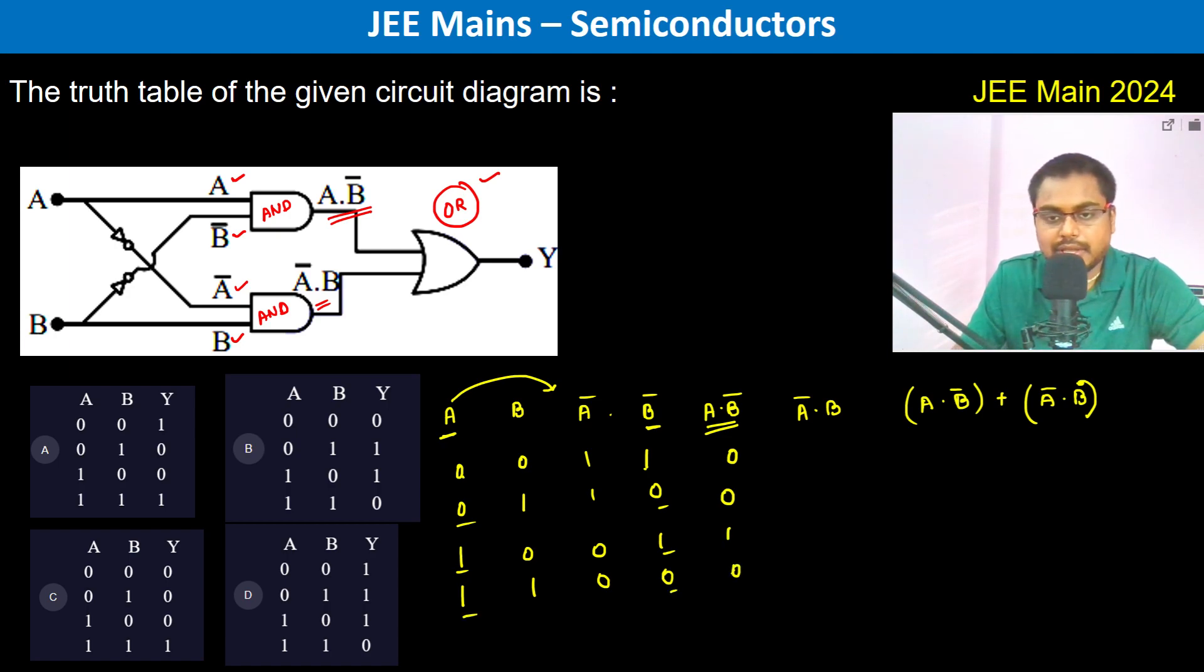Then A bar and B, A bar and B, zero, both should be one, yes only here it's one, otherwise everywhere it's zero. Now OR, so zero one one zero, so therefore B is going to be the answer. Thank you.